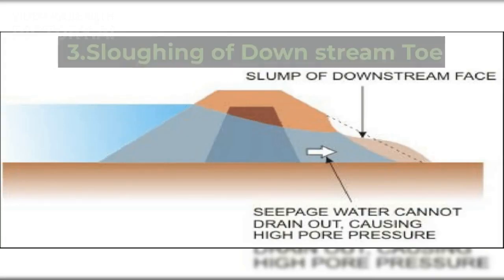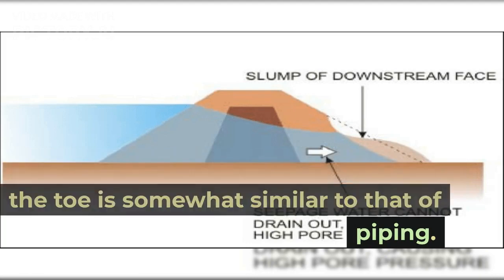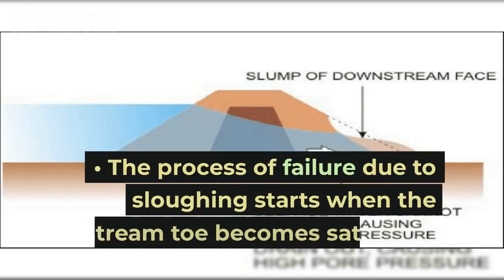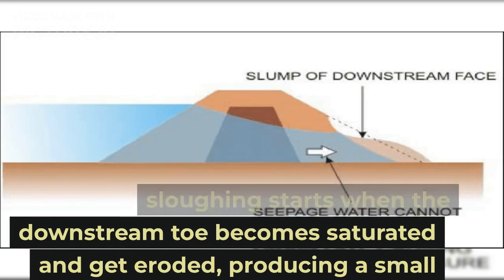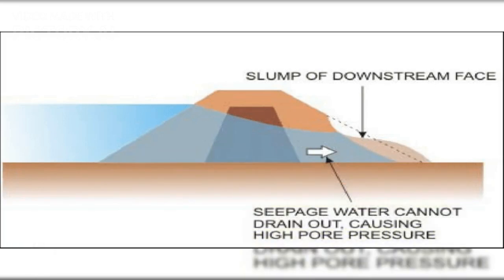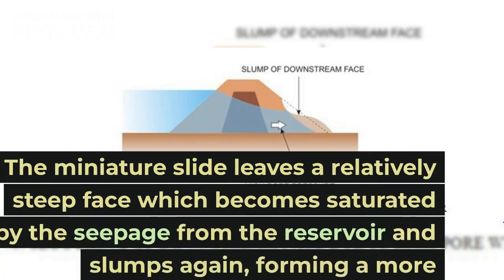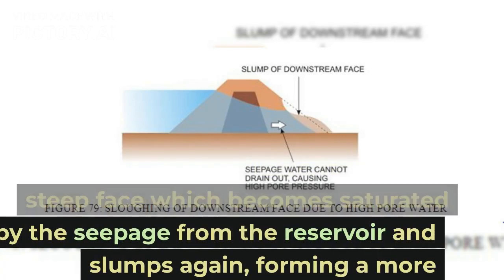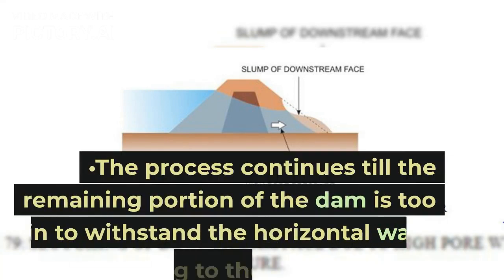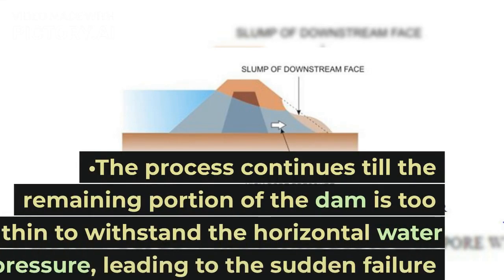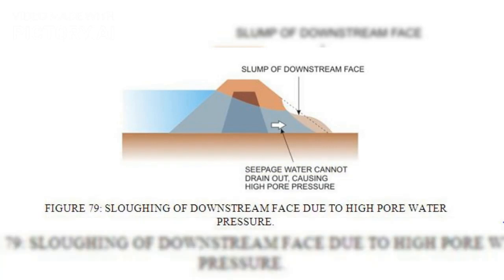3. Sloughing of downstream toe. The process behind sloughing of the toe is somewhat similar to that of piping. The process of failure due to sloughing starts when the downstream toe becomes saturated and gets eroded, producing a small slump or miniature slide. The miniature slide leaves a relatively steep face which becomes saturated by seepage from the reservoir and slumps again, forming a more unstable surface. The process continues till the remaining portion of the dam is too thin to withstand the horizontal water pressure, leading to the sudden failure of the dam.